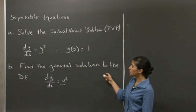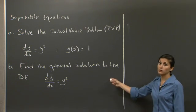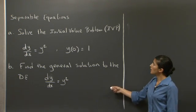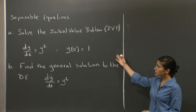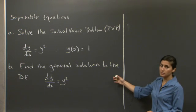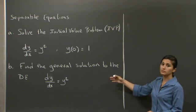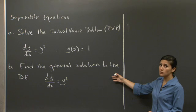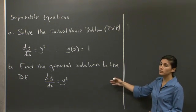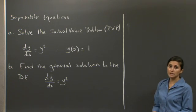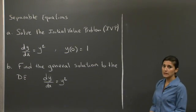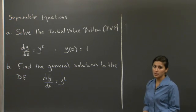In the second part of the problem, you're asked to find the general solution where no initial condition is imposed. You need to remember your method of separation of variables to tackle the first question, and in the second part, remember all the types of solutions and conditions to recover lost solutions. Why don't you take a minute, pause the video, work through questions A and B, and then we'll continue together when I come back.